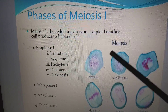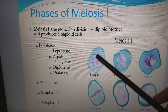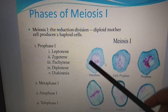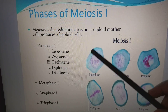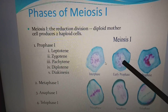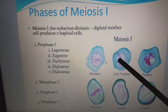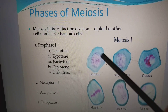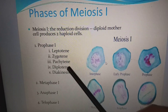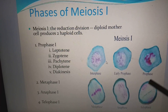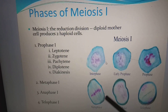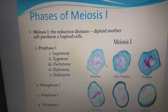The interphase is a preparatory phase divided into Gap I, Synthesis, and Gap II phases. Early prophase is divided into leptotene, zygotene, pachytene, diplotene, and diakinesis, followed by late prophase, metaphase, anaphase, and telophase.